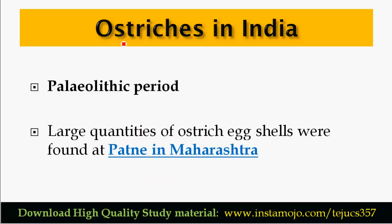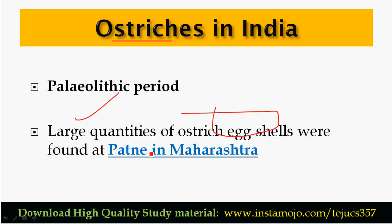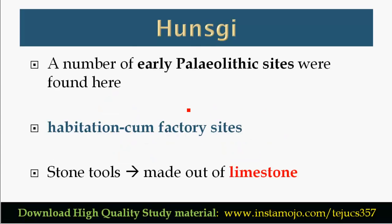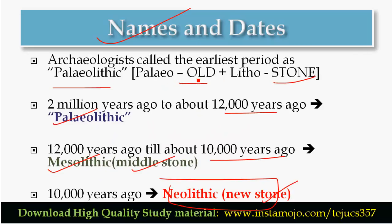Ostriches existed in India, especially during the Paleolithic period. Ostrich egg shells have been found as artifacts in Maharashtra. The next important keyword is Hansa Key, which refers to early Paleolithic sites.